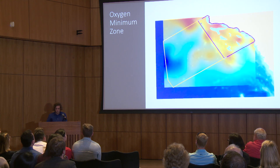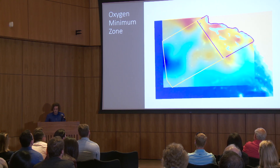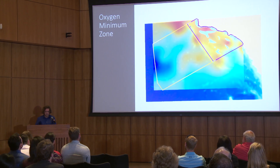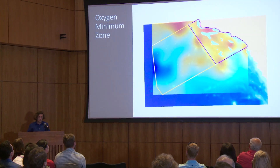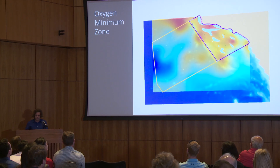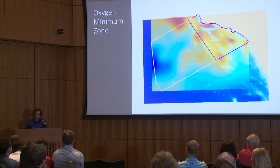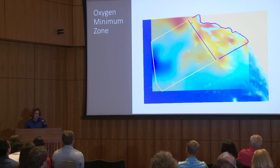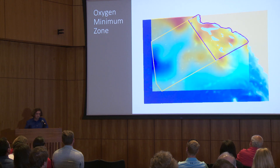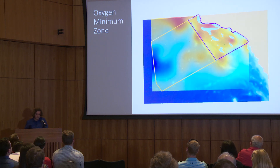Did you know there's a place in the ocean where some fish can't breathe? This place is called the Oxygen Minimum Zone, and it's where I chose to focus my time during the MAS NBC program. The OMZ is a layer of low oxygen that reduces fish habitat by squeezing them to the surface, condensing the fish we want to catch with those we're trying to protect, like marine mammals, sea turtles, and sharks.